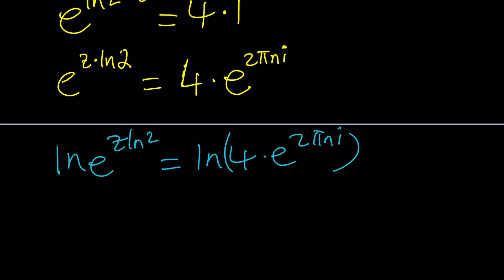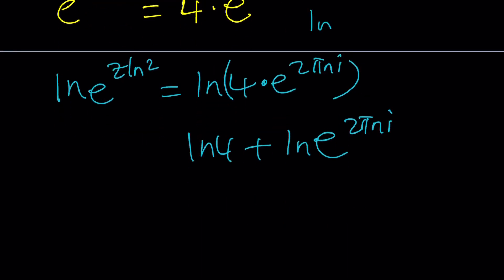But this is a product. So ln of a product can be written as sum of two ln's. Right? In other words, ln a b is ln a plus ln b.